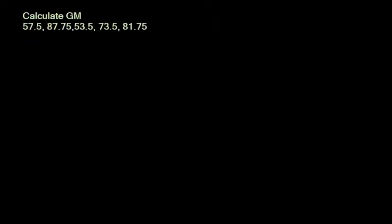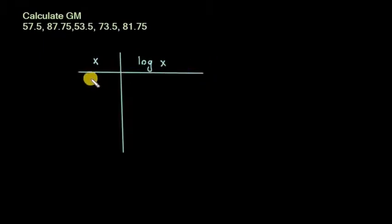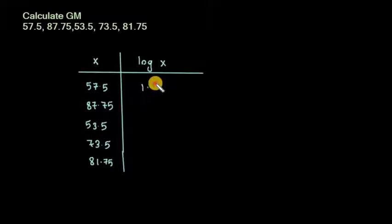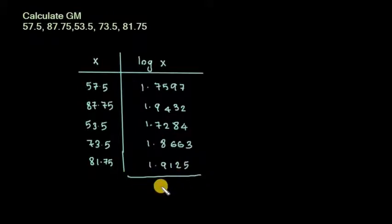Now let's solve a problem. Find the geometric mean of: 57.5, 87.75, 53.5, 73.5, 81.75. We form a table with the given data as x and calculate log x for each value: log(57.5) = 1.7597, log(87.75) = 1.9432, log(53.5) = 1.7284, log(73.5) = 1.8663, log(81.75) = 1.9125.